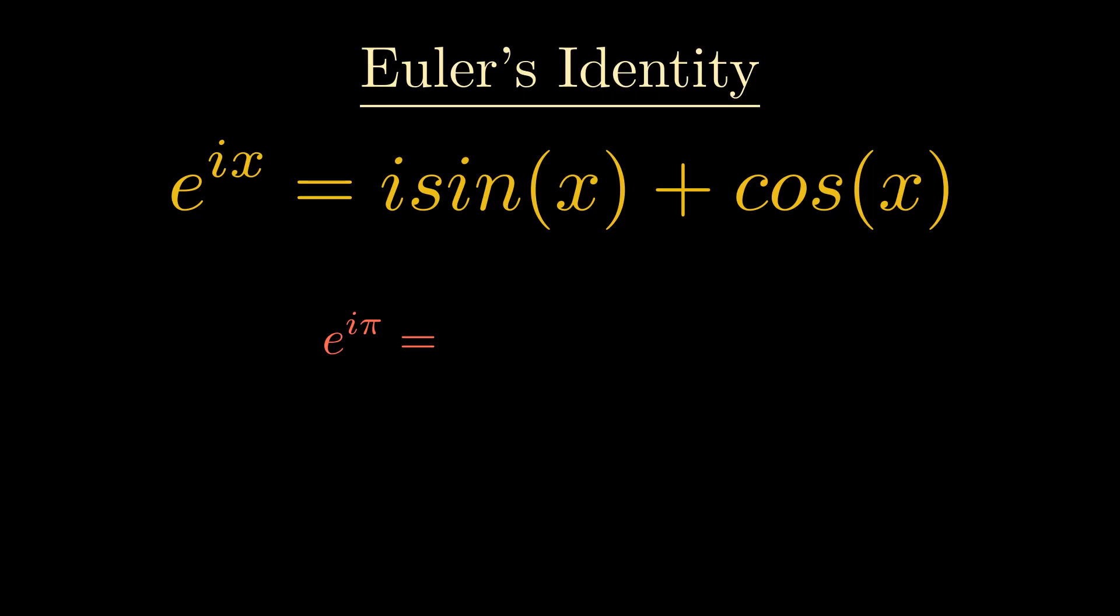The final part is now easy. Just substitute pi for x, and we can simplify. As sine of pi is zero, the imaginary component falls out, and we're left with just the real part. And finally, we have it. Euler's identity. This proof is long, but unbelievably elegant.